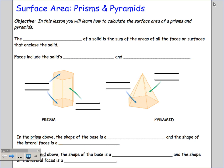The surface area of a solid is the sum of the areas of all the faces or surfaces that enclose the solid. You will see that I abbreviate surface area as SA, and sometimes just S if it's in an equation.